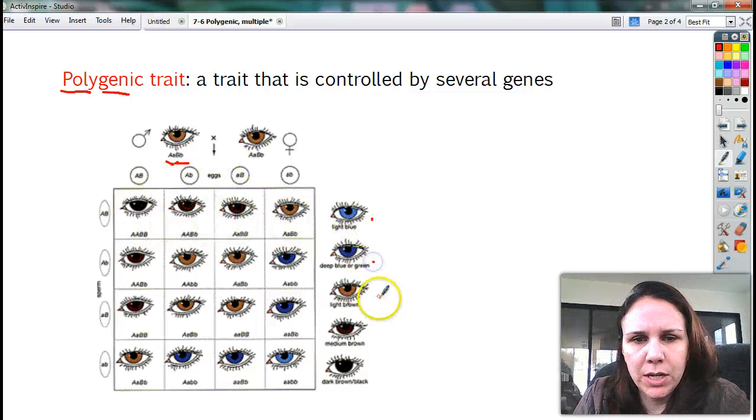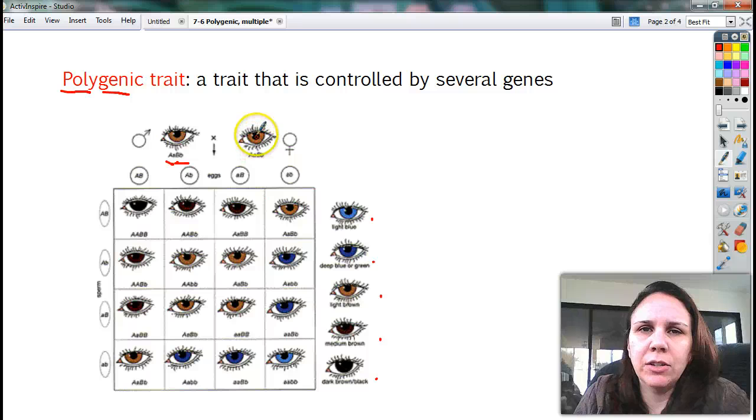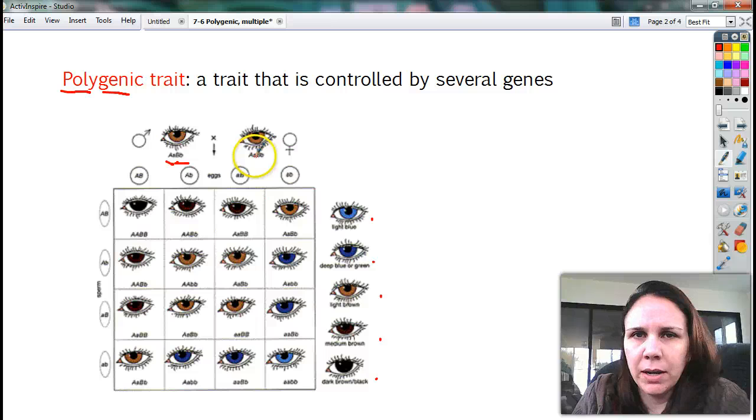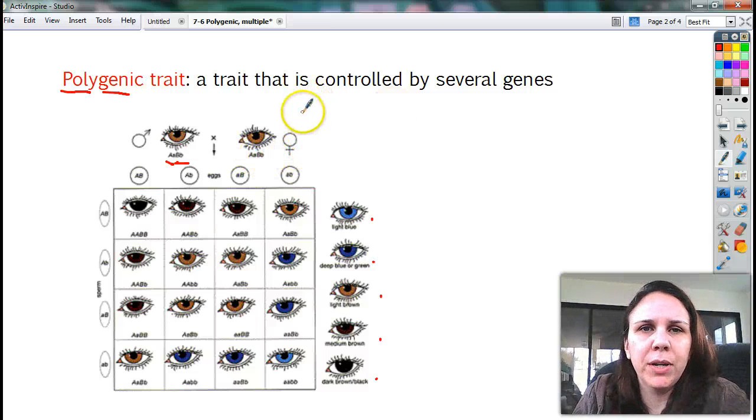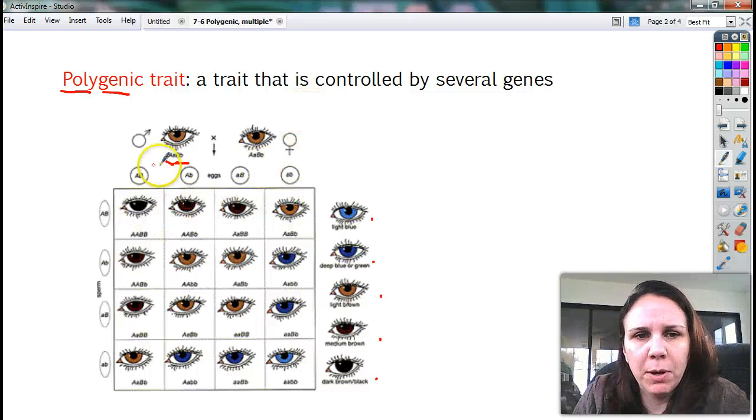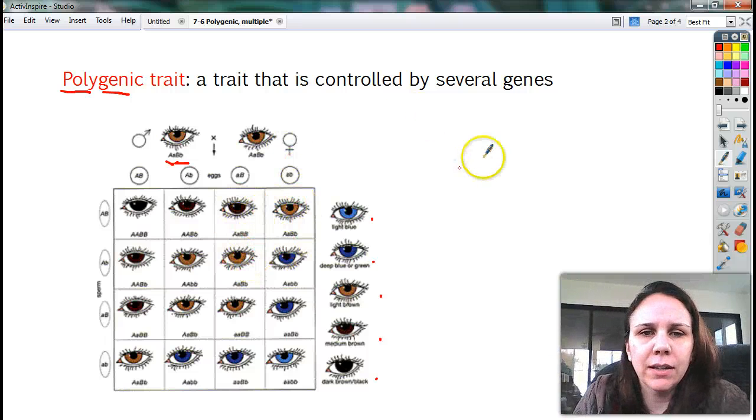And when we mix them together, look at all the different colors we get. Light blue, deep blue or green, light brown, medium brown, dark brown to black. So both parents have the same identical eye color, but look, now we've got five different possibilities. And this is only caused by two genes. Your skin color, hair color, all that kind of stuff, three, four, five, six genes. So think about what the cross would look like there. You'd probably have like eight by eight, you'd probably have 64 squares instead of just a measly little 16 like we have here.